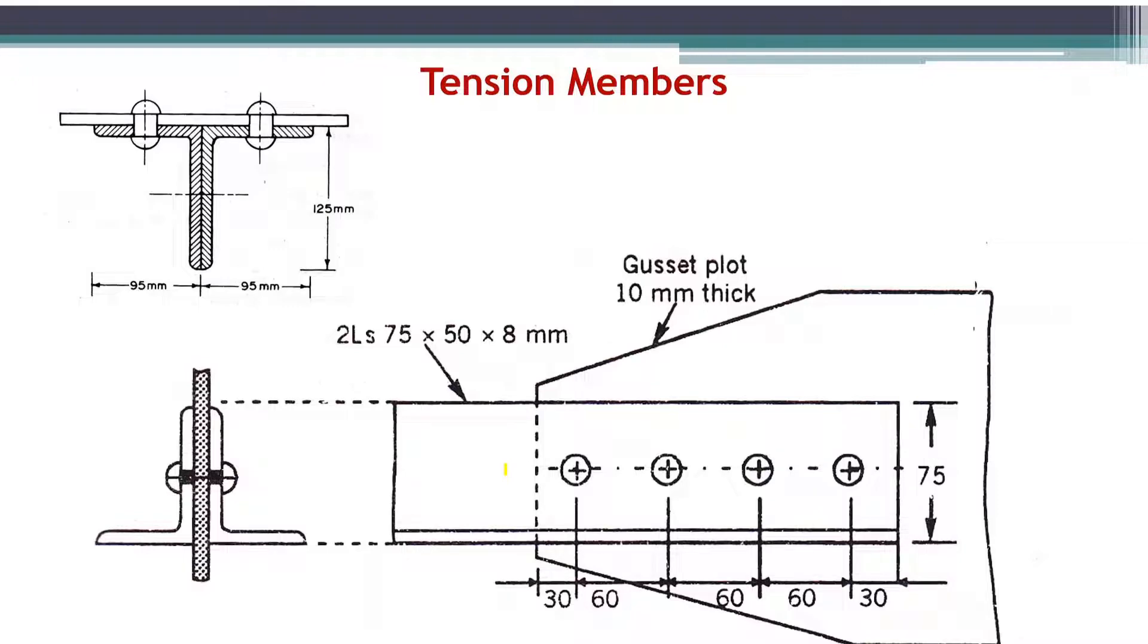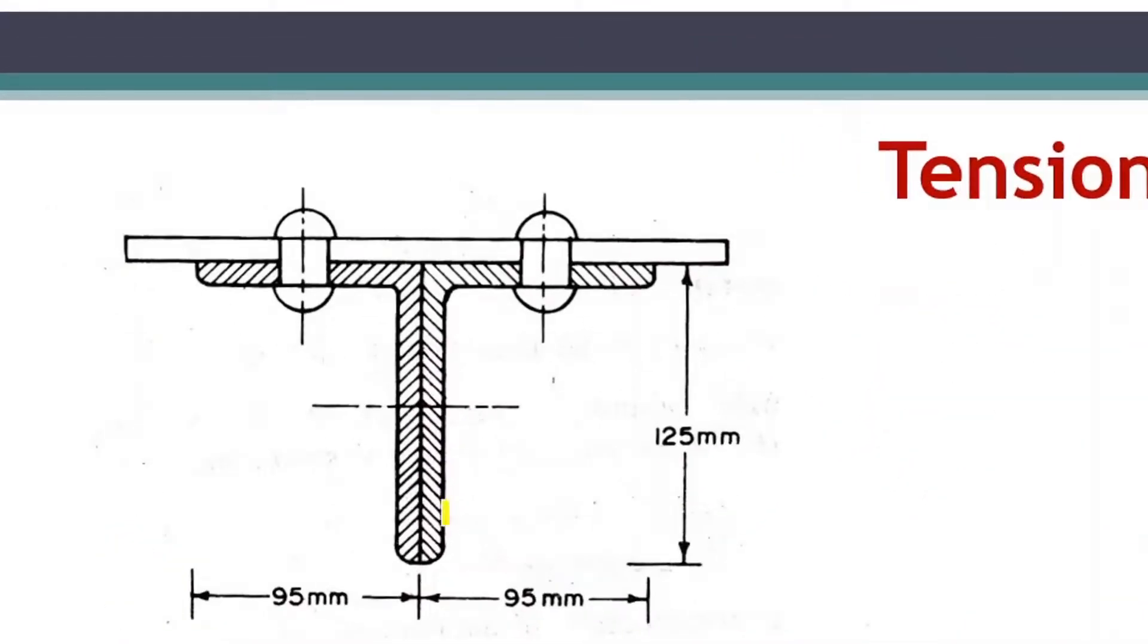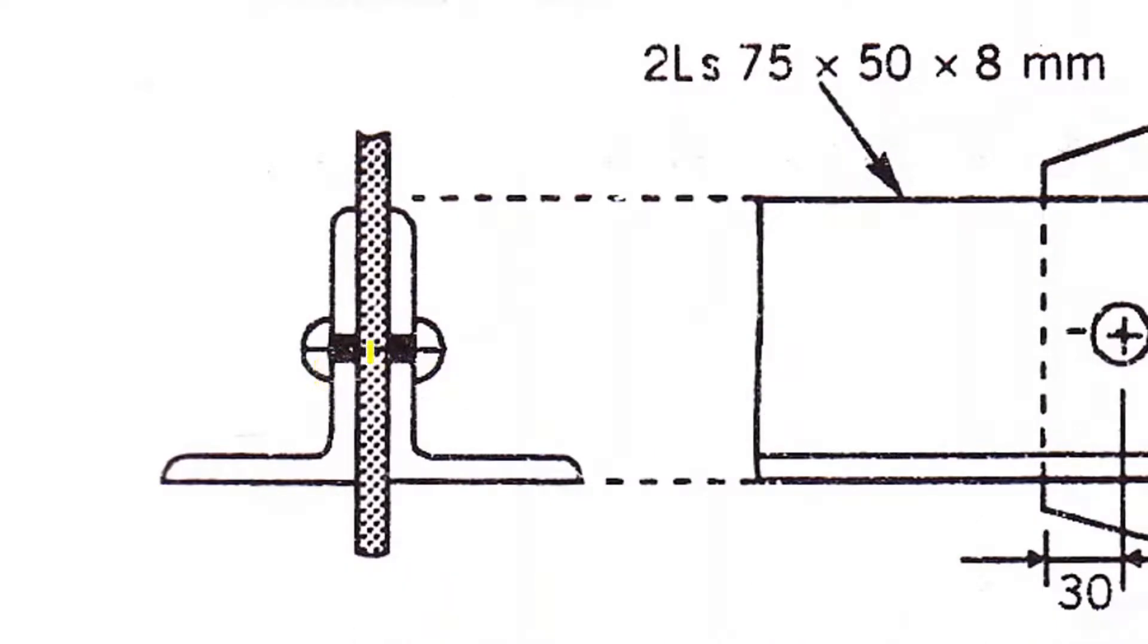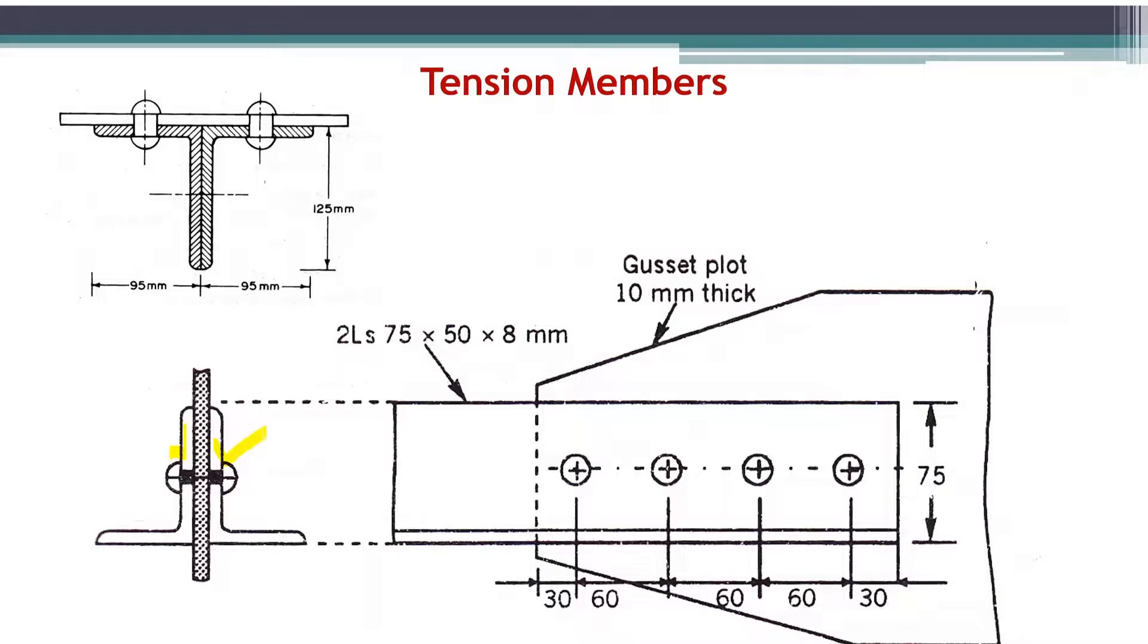If you look at this picture, two angles are connected together to act as a single tension member, but there are two different cross sections. In the first one, the angles are connected back to back on one side of the gusset plate, with no tension member on the other side. In the second picture, the angles are connected back to back on either side of the gusset plate—one angle on one side, the other angle on the other side. There is a big difference between these two cross sections in their behavior.